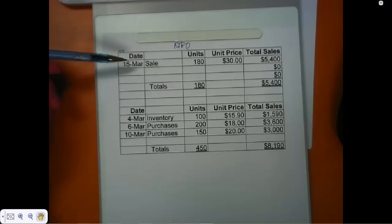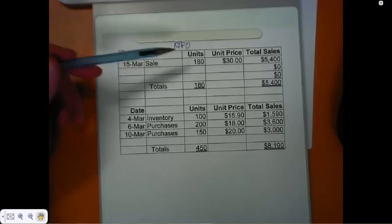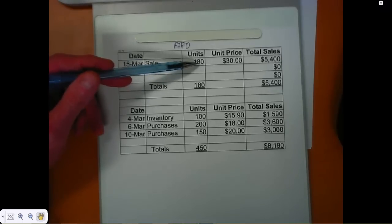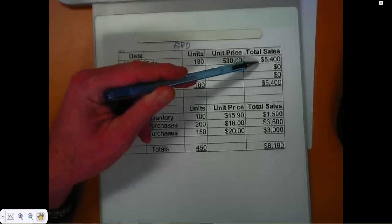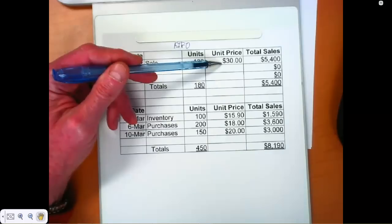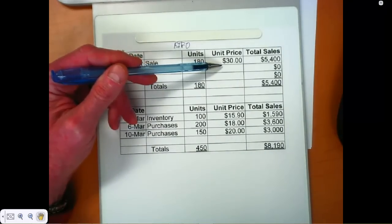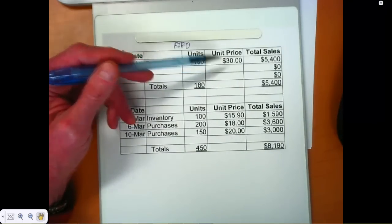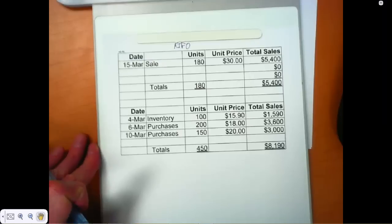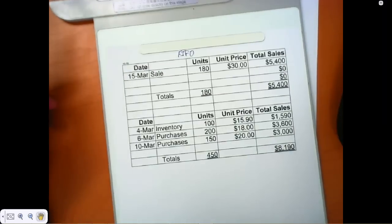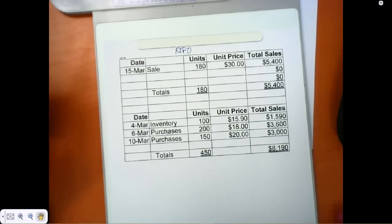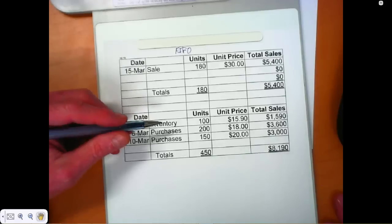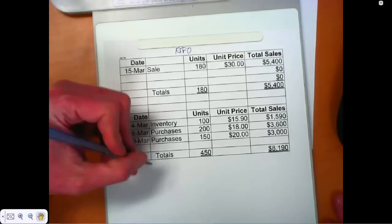Additionally, on March 15th we sold 180 units for $5,400, which works out to an average unit price of $30. Let's calculate cost of goods sold and ending inventory under the FIFO method.